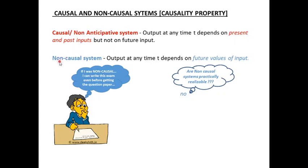In contrast, non-causal systems are systems in which the output at any time t also depends on future values of the input. If I need to calculate the output at any time, that current output might be dependent on present, past, or sometimes future values as well. That type of system is called a non-causal system. For example, consider having to write an exam without a question paper — you have to write a current exam based on a question paper that will be given after half an hour.